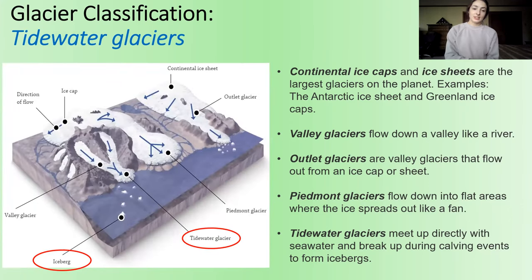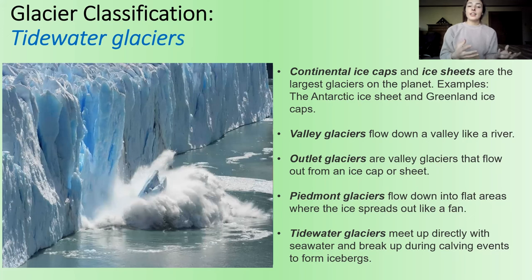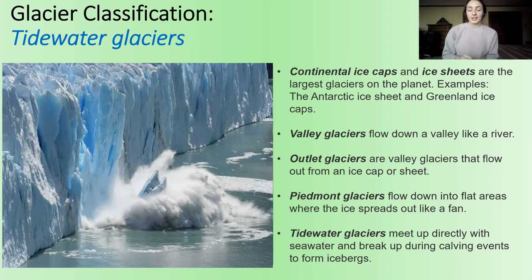Finally, we have tidewater glaciers. Tidewater glaciers meet up directly with seawater, and because of that, they break up from time to time with huge masses of ice breaking off and floating in the water as icebergs. When these icebergs break off their glacier, this is called calving.